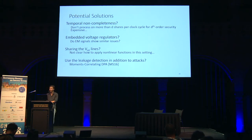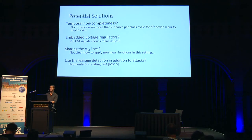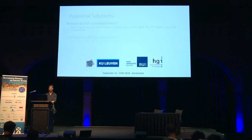Finally, we could deploy leakage tests in addition to attacks — using the T-test in scenarios where it is strong, to identify leakages quickly. To validate finally, it's important that a masking scheme is validated in a realistic environment. Some authors have been using moments-correlating DPA, and we'll see a talk about that tomorrow. With that, I'm ready for your questions.